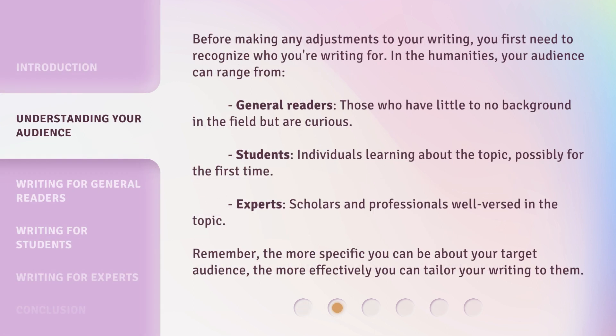Before making any adjustments to your writing, you first need to recognize who you're writing for. In the humanities, your audience can range from general readers — those who have little to no background in the field but are curious — to students, individuals learning about the topic possibly for the first time, and experts, scholars and professionals well-versed in the topic. Remember, the more specific you can be about your target audience, the more effectively you can tailor your writing to them.